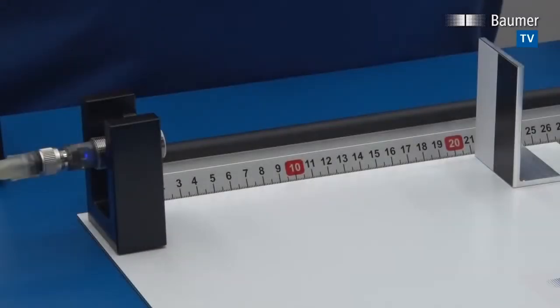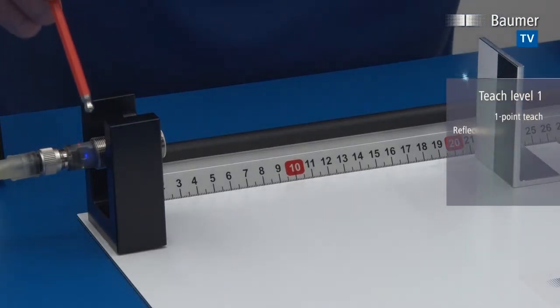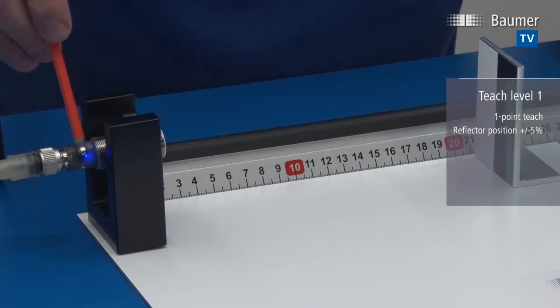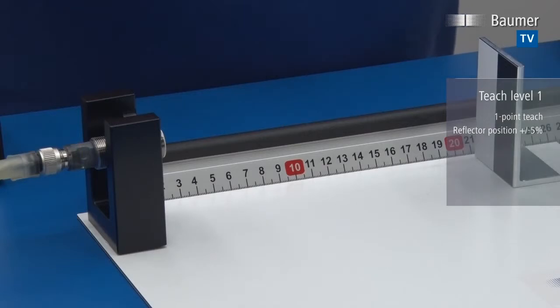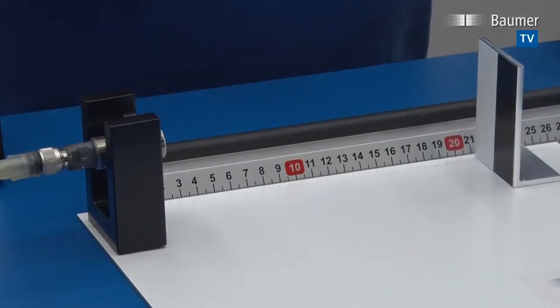To teach the sensor, we go into teach level one. We reach teach level one by using QTeach for two seconds. Now it starts to flash. What we have to do now is teach the sensor against a background, an object in the background, a reflector. This being the reflector for this demonstration.